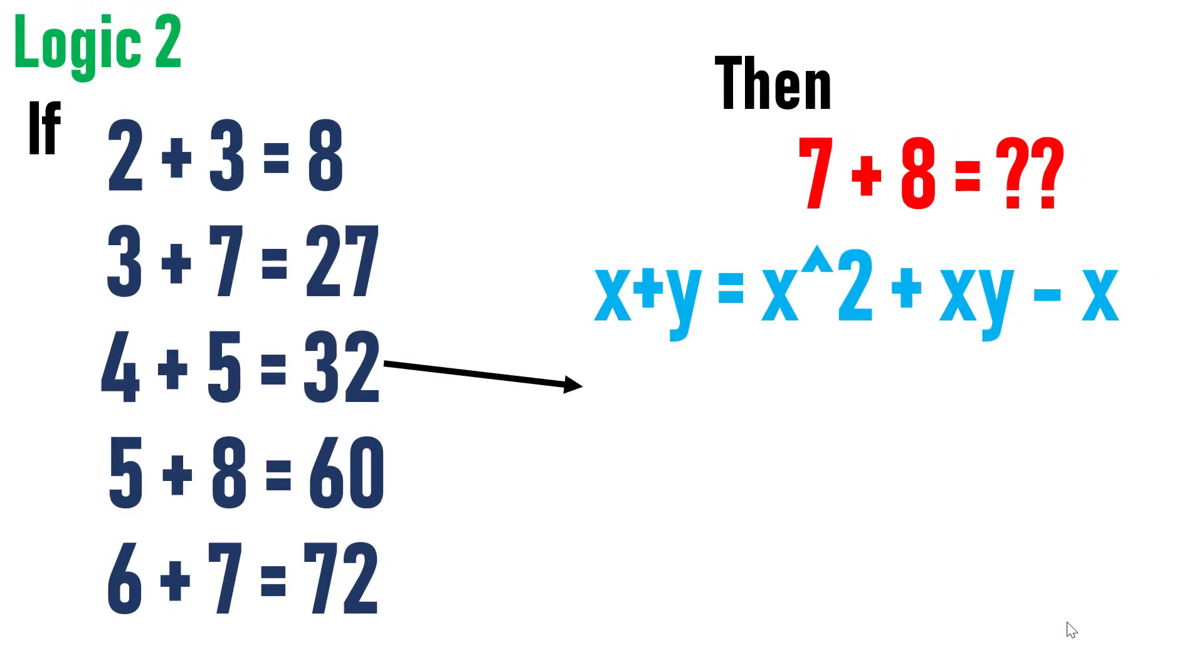So consider the third equation to validate the logic 2. The square of the first number is 16 plus product of two numbers is 20 minus first number is 4. So which will yield the answer 32. Hence, the logic holds good for first three equation. Now, let's try for 7 plus 8.